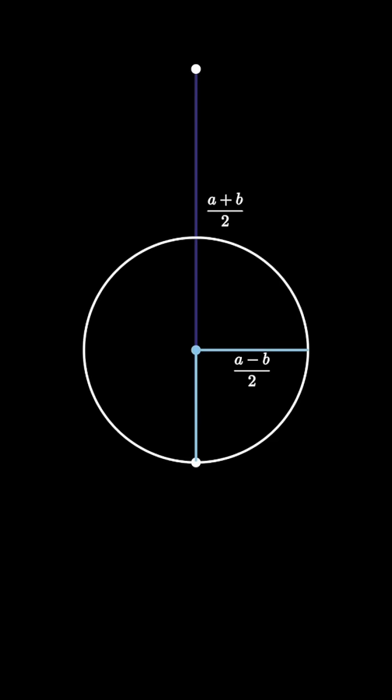Start with a line segment of length a and cut it into two segments of length (a+b)/2 and (a-b)/2. Use the (a-b)/2 line segment as the radius of a circle.